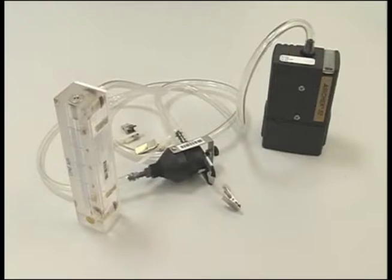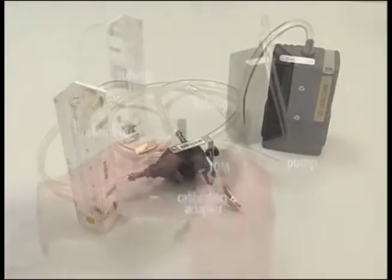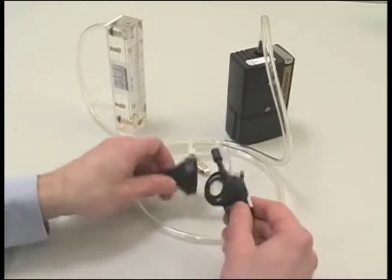The order of the components for calibration is pump, tubing, IOM, IOM calibration adapter, tubing, and rotometer. To set up the calibration adapter,